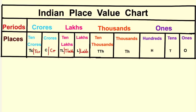Look at the Indian place value chart. The periods of the Indian place value chart are ones, thousands, lakhs, and crores.